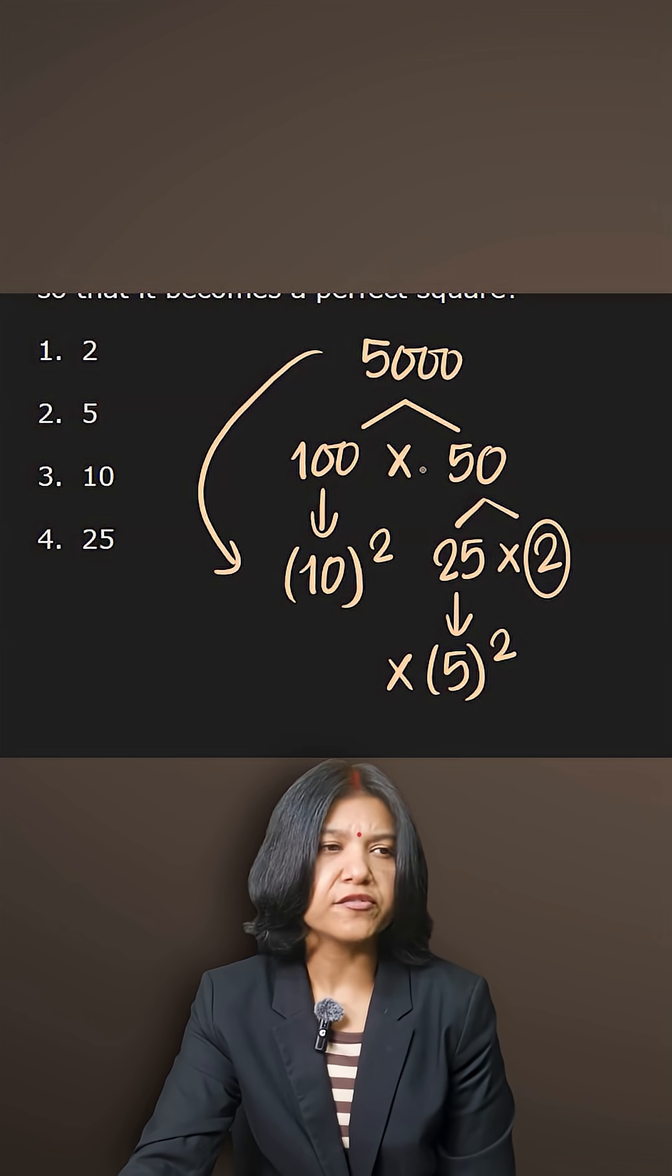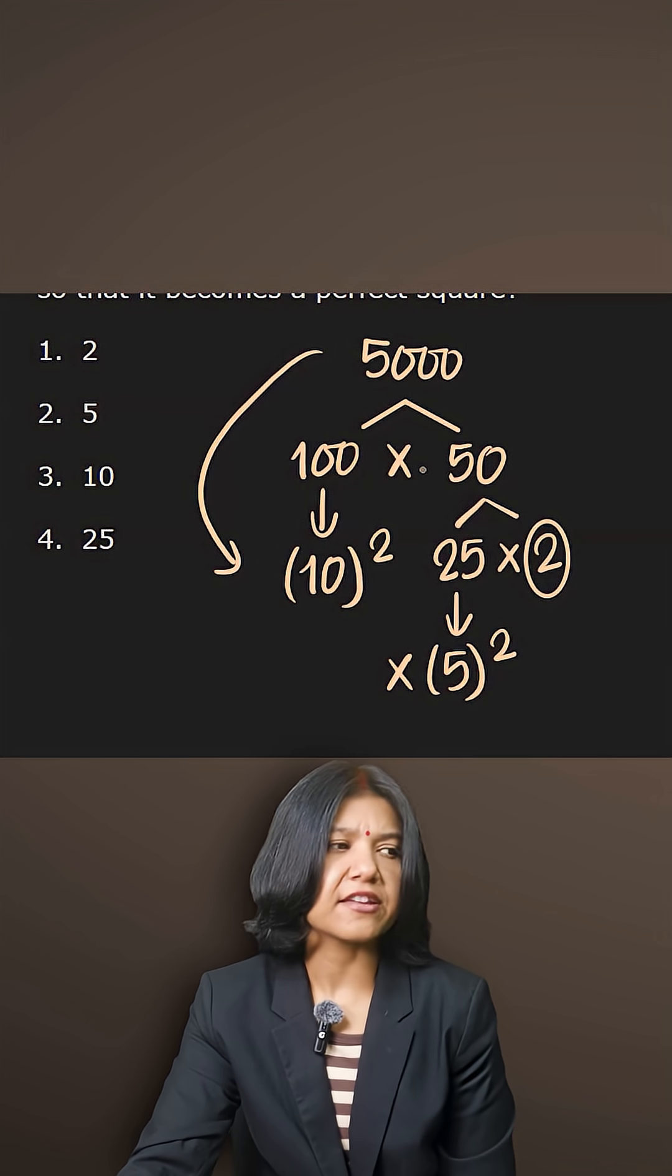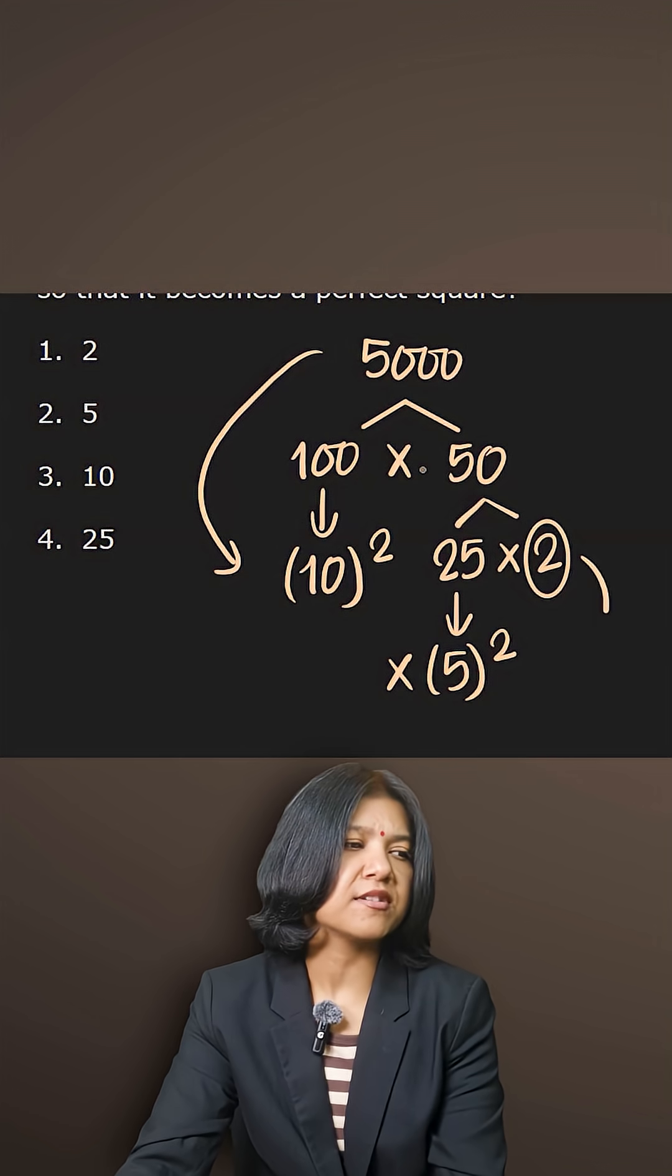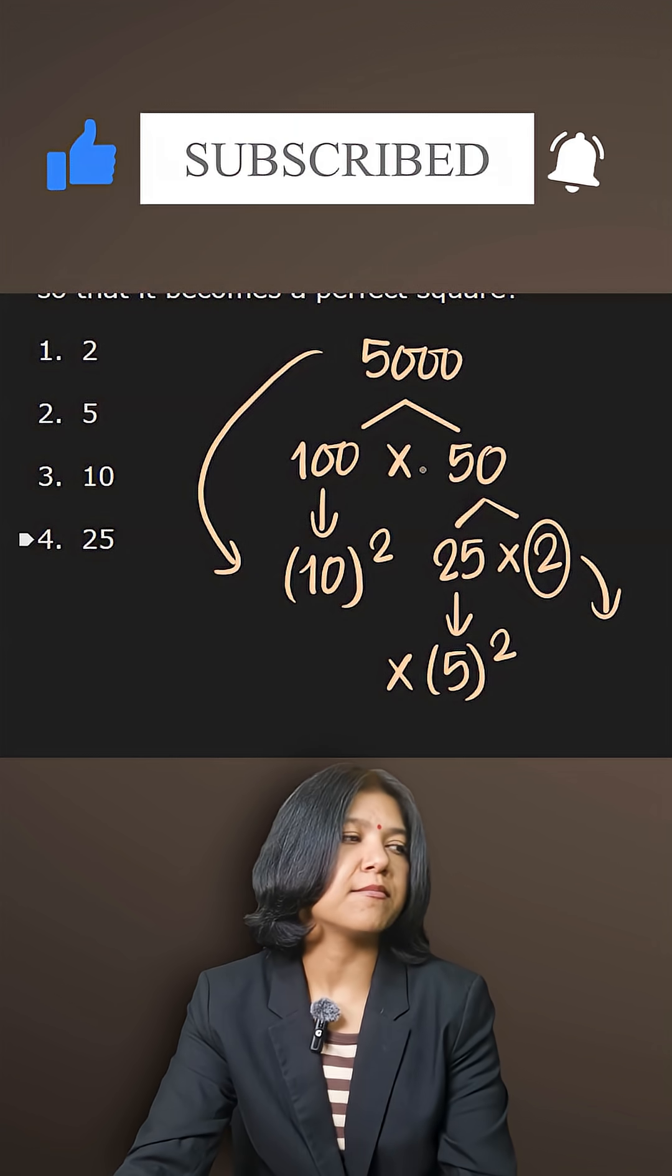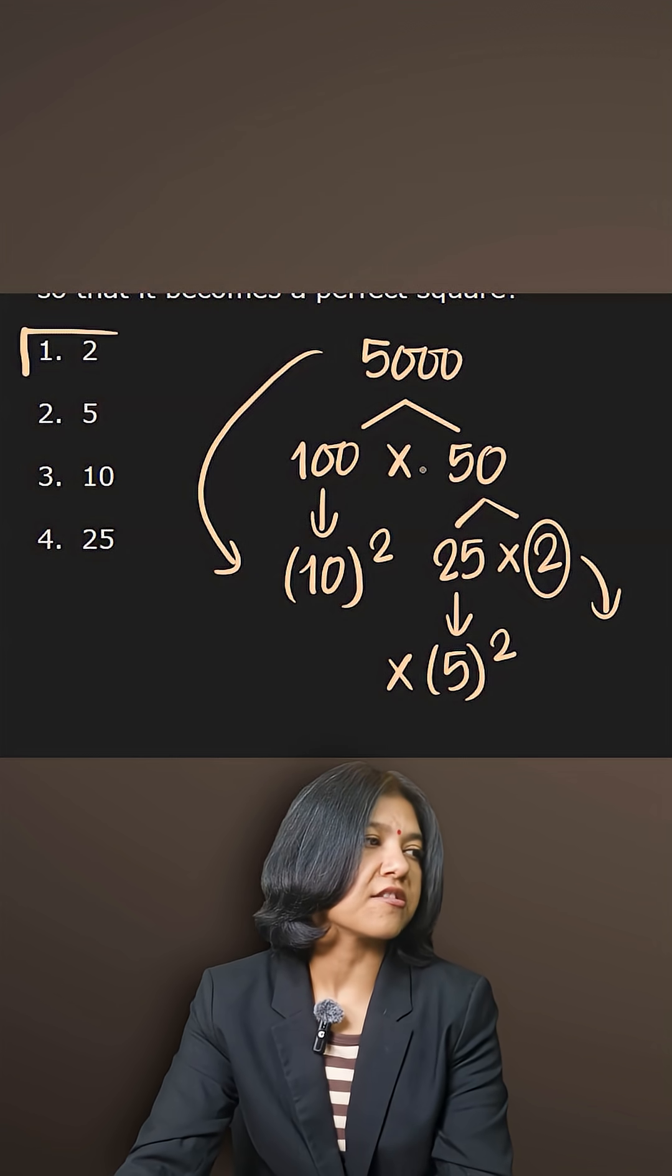Therefore this additional number that you're getting without the square is the number that you're supposed to divide by such that the number becomes a square number. Hence the answer is 2.